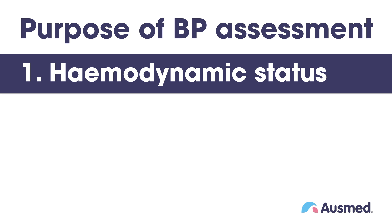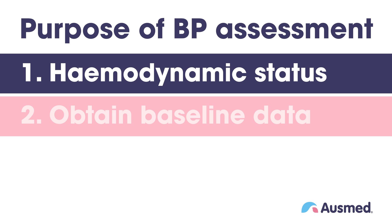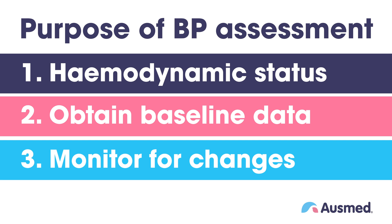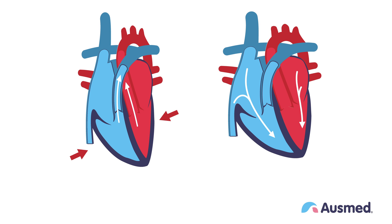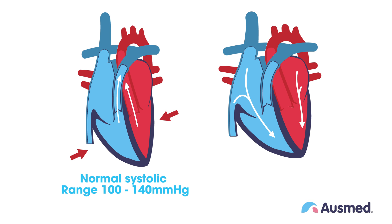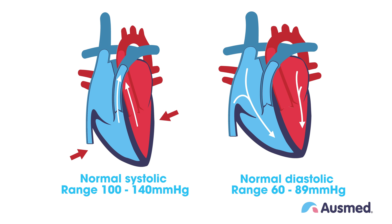to determine a person's hemodynamic status, gain a baseline, and monitor for changes from this baseline. Blood pressure measurements take into account systolic — the contraction of the ventricles — and diastolic — the ventricles are at rest and filling. A normal systolic range for an adult is 100 to 140 millimeters of mercury. A normal diastolic is between 60 and 89 millimeters of mercury.